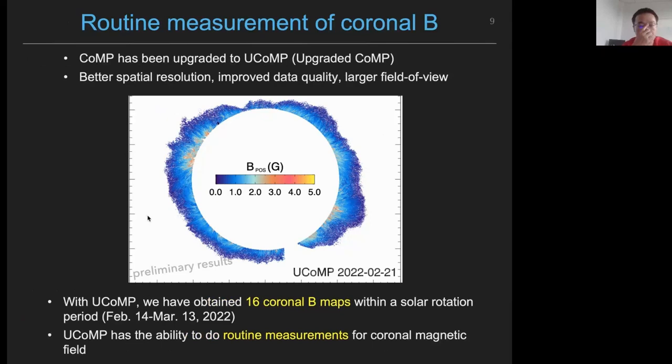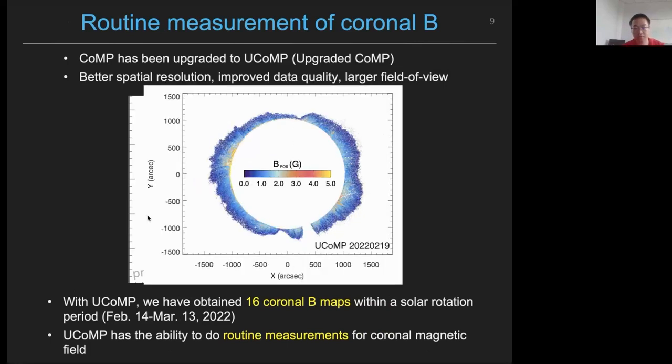For now, CoMP has already been upgraded to UCOMP. UCOMP has a better spatial resolution, an improved data quality, and a larger field of view. With UCOMP, we apply the similar magnetoseismology method. We have obtained about 16 coronal magnetic field maps within a solar rotation period. This means that UCOMP has the ability to do routine measurements for the coronal magnetic field.